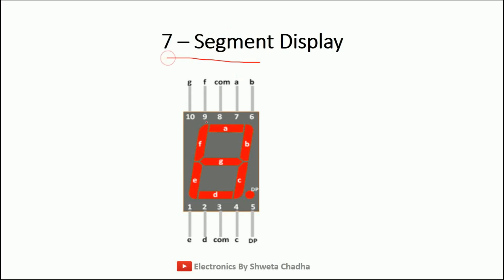Next is our 7 segment display. It has 7 LEDs: A, B, C, D, E, F, and G, which will either glow on or off depending upon what we are supposed to show at the output. PIN 1 is E, PIN 2 is D, PIN 3 is common, PIN 4 is C, PIN 5 is DP (decimal point), PIN 6 is B, PIN 7 is A, PIN 8 is common, and then F and G. The common pin can be connected either with VCC or ground depending on whether we are using common anode or common cathode configuration.